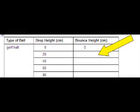Drop the golf ball from 20 centimeters and note the height that the ball bounces. Verify the height that the ball bounces by dropping the ball a second time. Record the bounce height and the drop height in the data table. The drop height was 20 centimeters; enter your bounce height result in the data table.